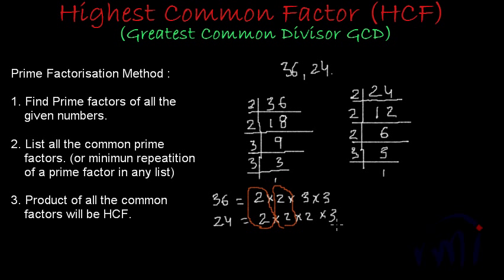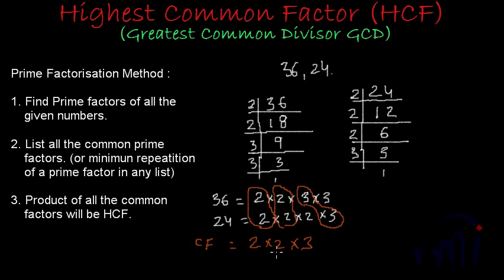After this, we have two 3s in the list of factors of 36 and we have one 3 in the list of factors of 24. So I can find one 3 common in these two lists. If I write all the common factors, it will be 2 × 2 × 3.